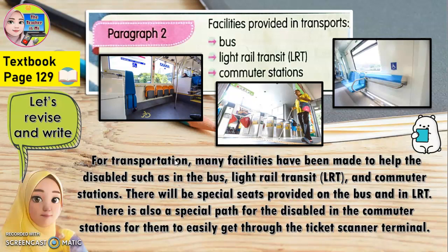Untuk pengangkutan, banyak kemudahan yang telah dibuat untuk membantu orang kurang upaya, contohnya seperti di dalam bus, LRT, dan juga station commuter. There will be special seats — tempat duduk yang istimewa — disediakan di atas bus dan di dalam LRT. There is also a special path — laluan khas untuk orang kurang upaya di station commuter — untuk memudahkan mereka masuk ke terminal pengesahan tiket.